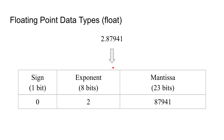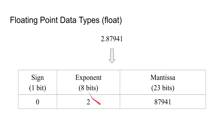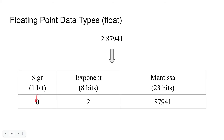Here is a breakdown of how a float looks in computer memory. Taking the number 2.87941, it has one bit for the sign — since it is positive, the bit is zero. Eight bits are used for the exponent, which would be 2. And 32 bits for the mantissa, which would be 87941. Of course, computers store in binary, but this is an example to make it easier to understand.